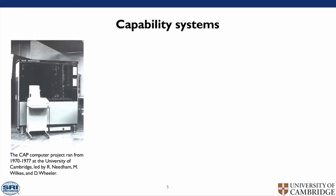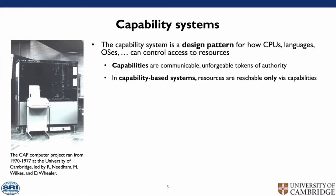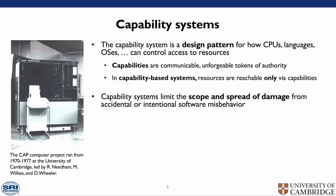What is CHERI? To answer that, we first need to look at what capability systems are. A capability system is a design pattern for how CPUs, languages, operating systems and more can control access to resources. Capabilities are communicable and forgeable tokens of authority. In capability-based systems, resources are reachable only via capabilities. Capability systems limit the scope and spread of damage from accidental or intentional software misbehaviour.